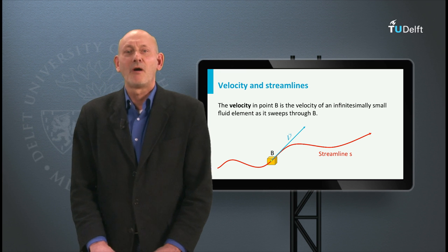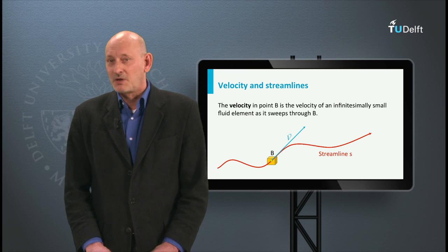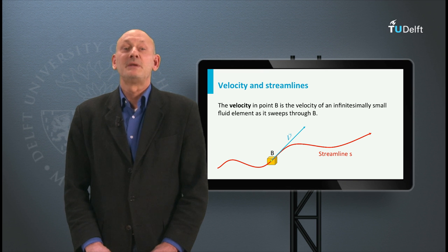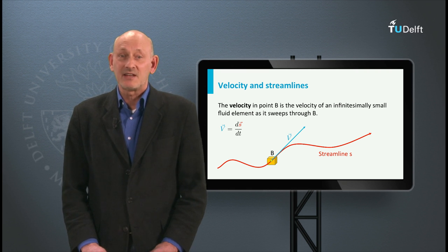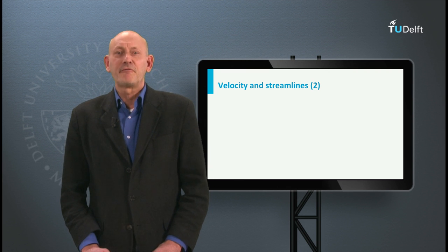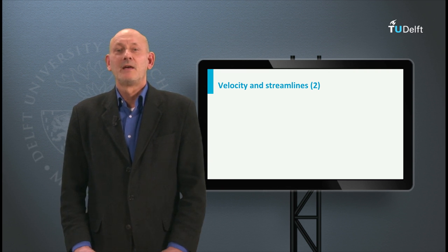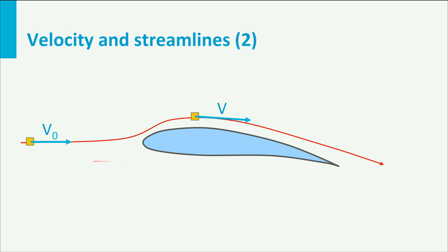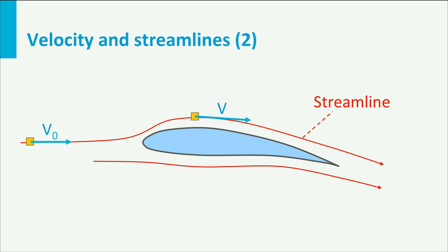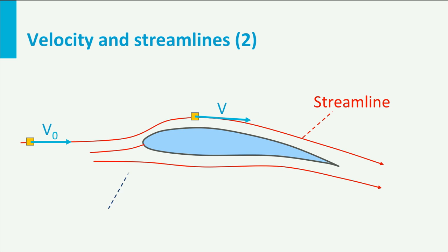The path that particles of a fluid follow is called a streamline. Here we see an infinitesimally small particle B moving along such a streamline. The velocity of this particle in any point of the streamline is pointing in the direction of the tangent at that point. If we look at the flow over an airfoil, we can visualize the streamlines with smoke, for instance. We see streamlines passing over the airfoil upper surface and streamlines moving along the lower surface. There is one streamline — the dividing streamline — that ends on the airfoil leading edge. This point is called the stagnation point, and the associated pressure is the stagnation or the total pressure.